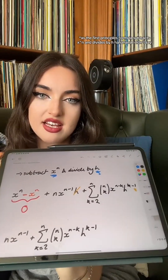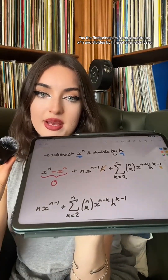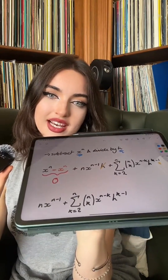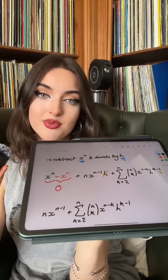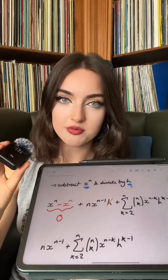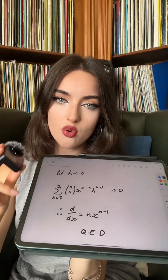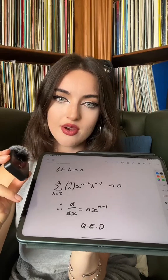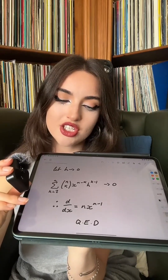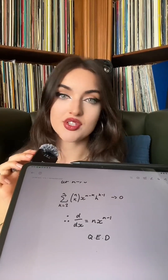We subtract x to the n and divide by h. By doing that, we end up with a really neat term: n times x to the n minus 1, plus the summation from k equals 2 up to n. Now, just as we do for differentiation from first principles, we let h tend to 0, which makes the entire summation term tend to 0. Therefore, the derivative equals n times x to the n minus 1. Quad erat demonstrandum — that which was to be demonstrated.